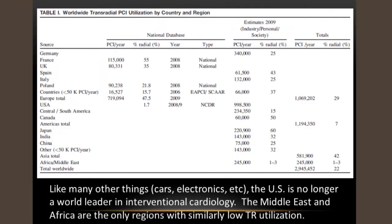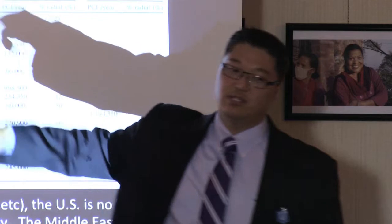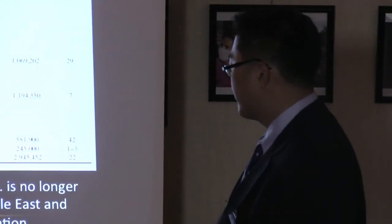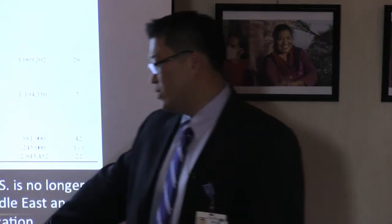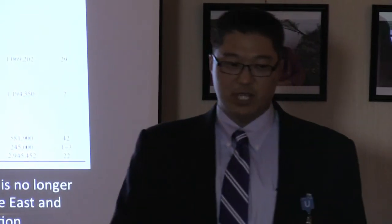This technique became more popular outside the US. Like many other things — cars, electronics — the US is no longer a world leader in interventional cardiology. Places like France and Japan have radial procedure utilization above 50%, sometimes as high as 80%. But the US only had 1.7% radial procedures. The Middle East and Africa were the only other regions with similarly low trans-radial utilization.